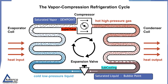Looking at the refrigeration cycle, as our refrigerant enters the evaporator as a liquid and absorbs heat, it evaporates and becomes a saturated vapor at the exit — this is where we measure superheat. On the PT chart, we use the dew point column to calculate superheat coming out of the evaporator. On the high-pressure side, gas enters the condenser and condenses into a liquid at the end of the condenser.